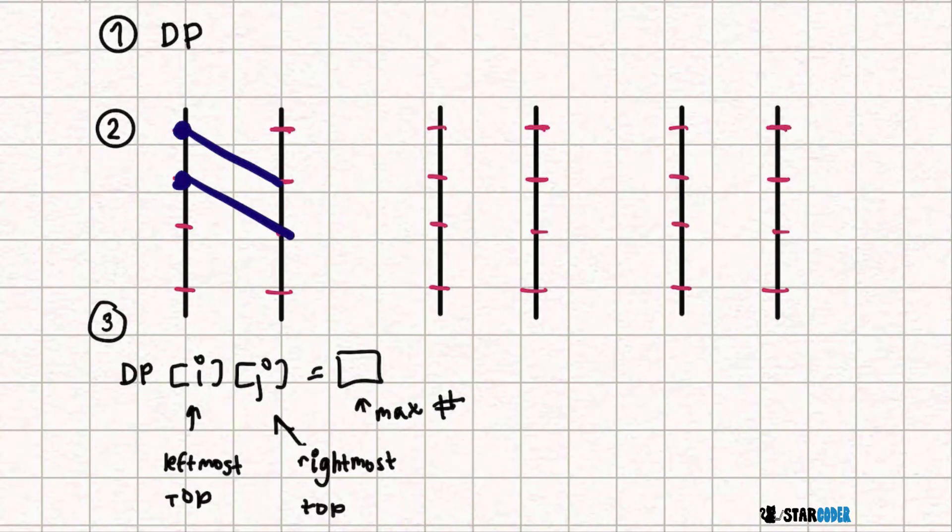For our DP we're going to have two dimensions. The first dimension here is the current number on the left or the highest number on the left that we're using, and the second dimension is the highest number on the right we're using.